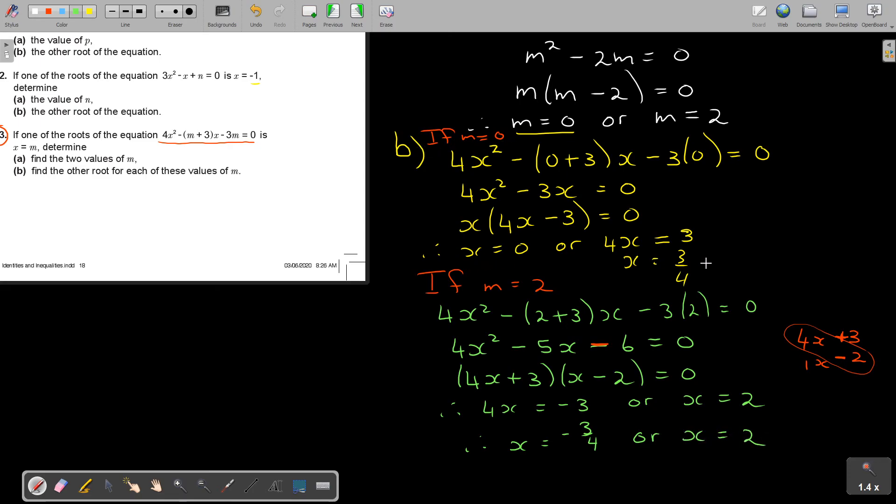So if m is 0, this is my two answers. If m is equal to 2, then this will be my two answers. And that's what they said. Find the other root for each of the values. I could even go a little bit further, because can you see, if the other root, so I could say, therefore, the other root is, because it was 0, so the other root is 3 quarters. And again, now, was 2, so the other root was this. So therefore, the other root is x equals negative 3 quarters point final.